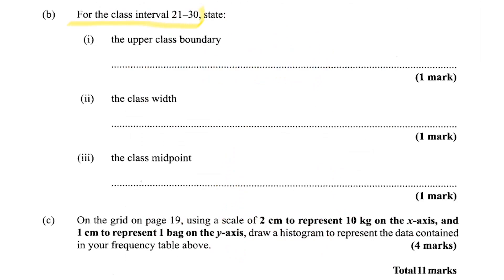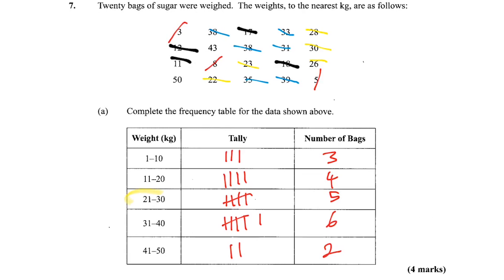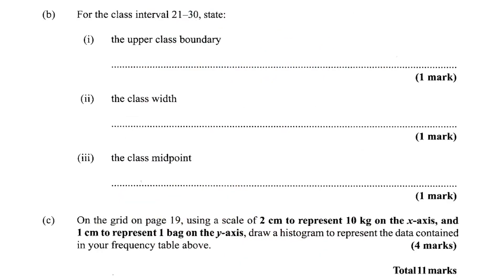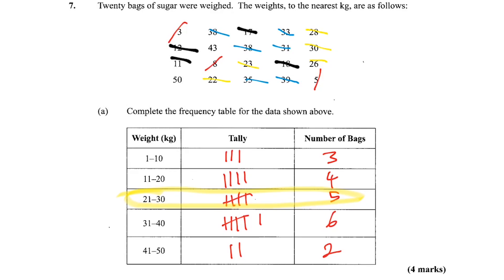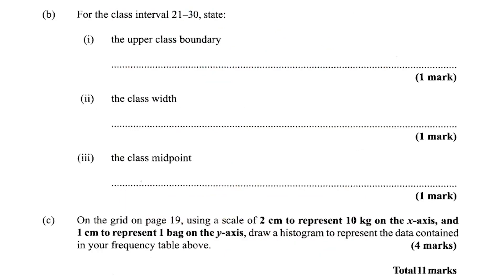All right. For the class interval 21 to 30, state the upper class boundary, class width, and class midpoint. So we're looking at this only — 21 to 30. The upper class boundary first. Remember, the boundary goes to the 0.5 — it goes between the upper class limit and the lower class limit of the next class. So the upper class boundary for this would be 30.5 kg.